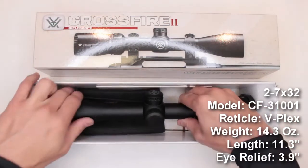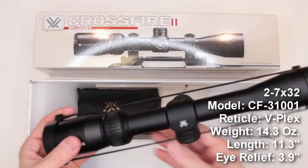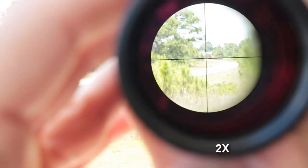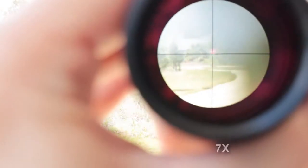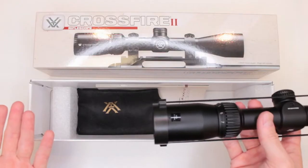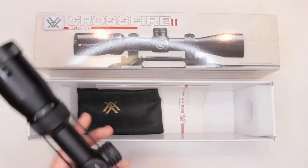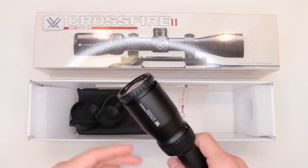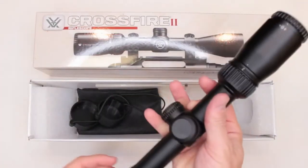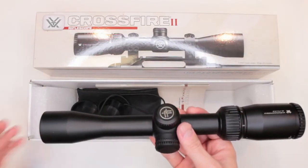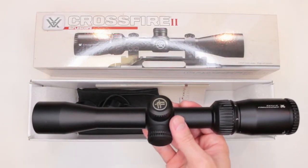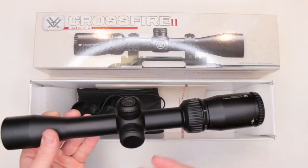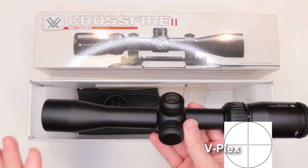I don't want to offend anybody, but in case you don't know, 2 to 7, the first two numbers, it means it magnifies from 2 power to 7. And the next number, by 32, it means the size of the front objective lens. Basically the higher the number, typically the bigger field of view you have.